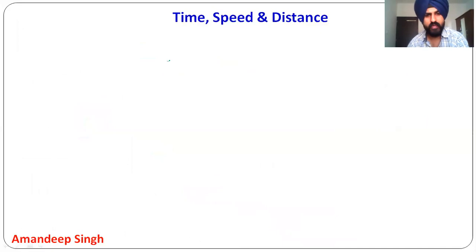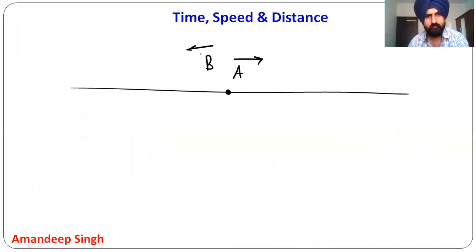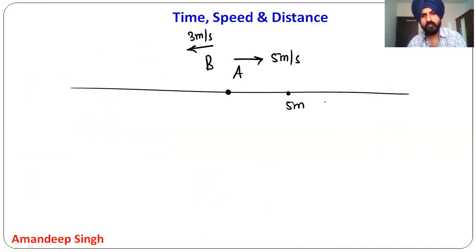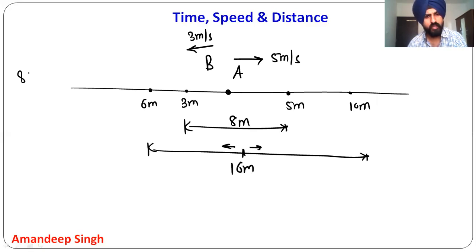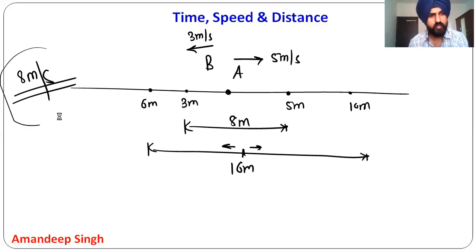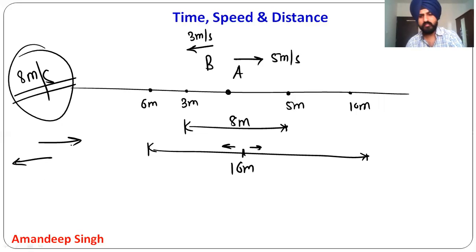Now, if two people are on opposite sides — A is at one side moving at 5 m/s and B is at the other side moving at 3 m/s — they are moving towards each other. In one second, A covers 5 m and B covers 3 m, so the gap reduces by 8 m per second. So the relative speed is 8 m/s. When the direction is opposite, we add the speeds. When the direction is the same, we subtract. This is the basic logic for relative speed.